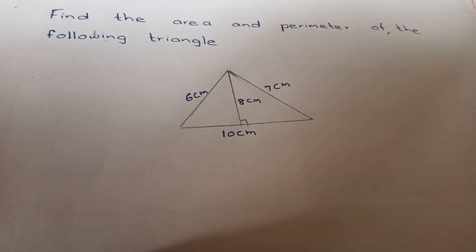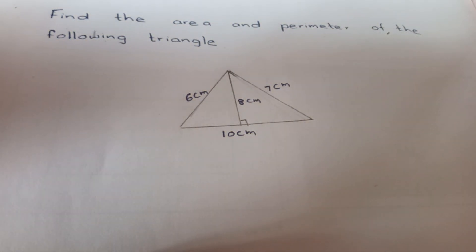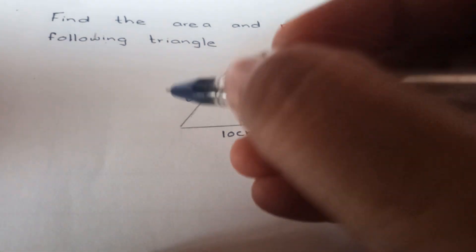Okay, let's find the area and perimeter of the following triangle. First we'll find the area.